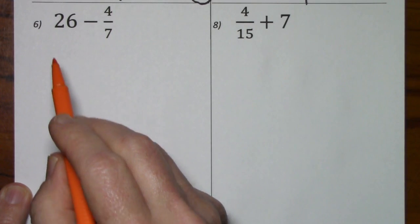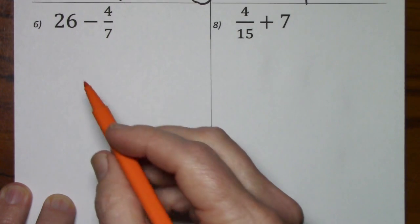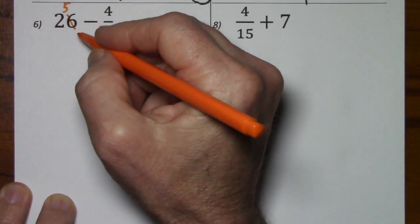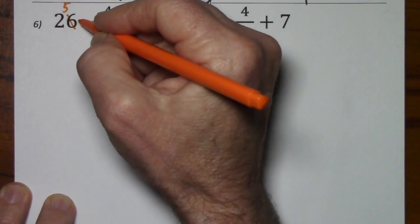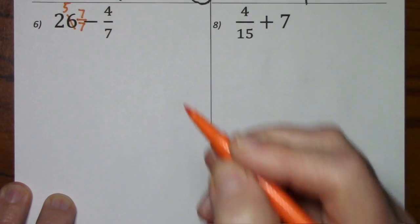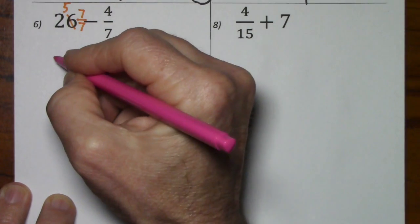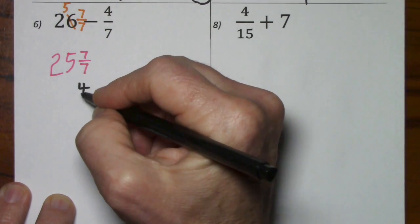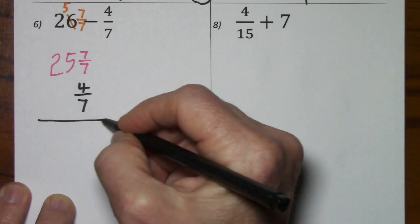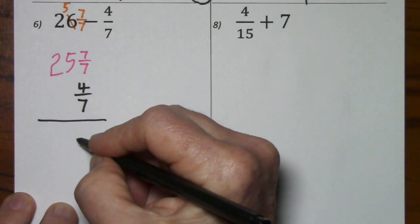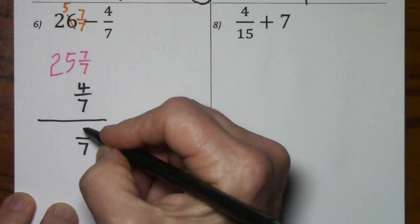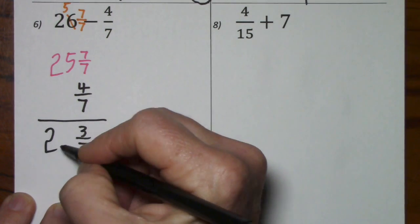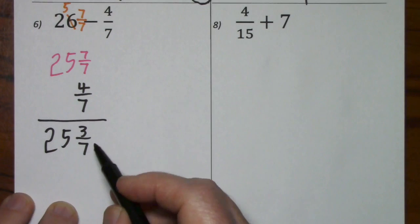Okay, looking at this one, the signs are different, positive and negative. We'll need common denominators. 6 becomes 5. We want denominators of 7. So, I'll rewrite 26 as 25 and 7 sevenths. And the 4 sevenths, I'll just put underneath the fraction. We're keeping our denominator of 7. 7 subtract 4 is 3. And this 25 just comes down. So, 25 and 3 sevenths.